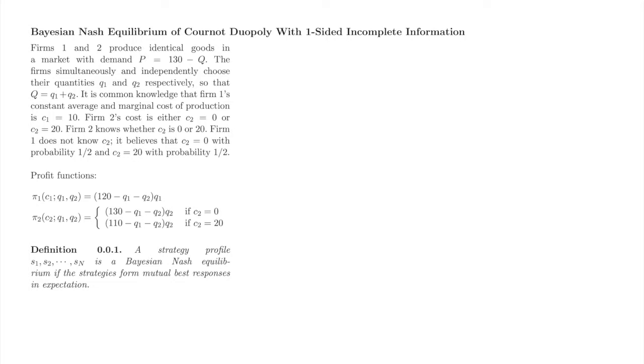There are a couple different approaches to finding Bayesian Nash equilibria. Which approach we take depends on the structure of the action and type spaces. In this game, the type spaces are discrete and the action spaces are continuous, so we will directly maximize each firm's expected profit.